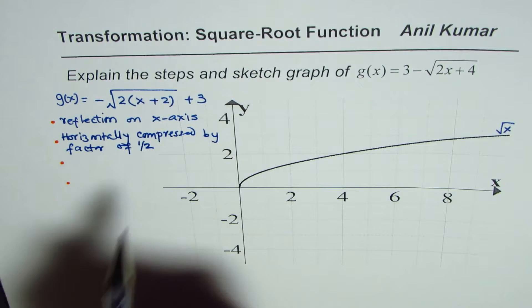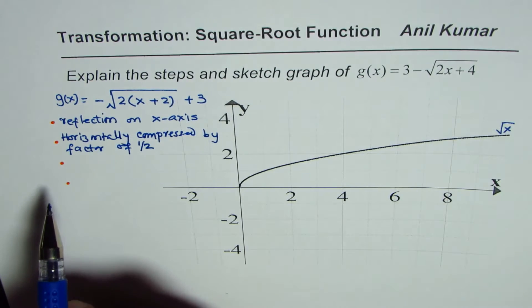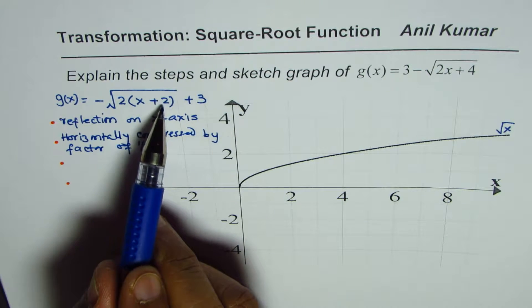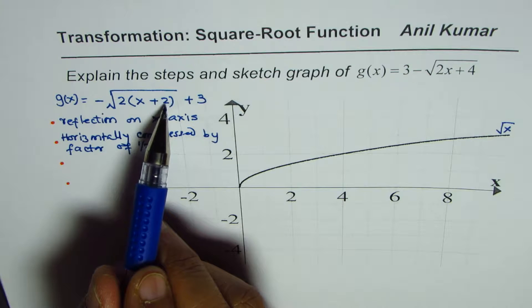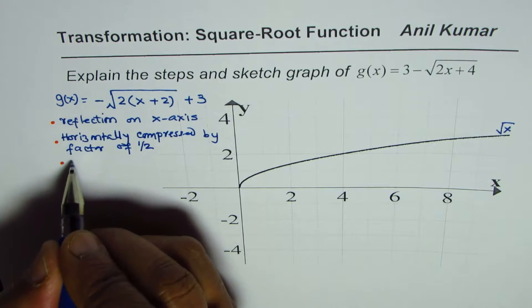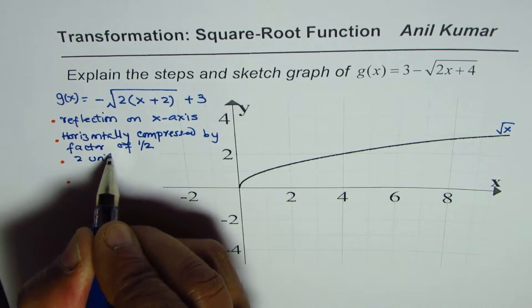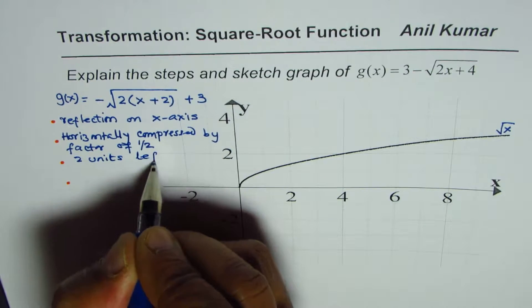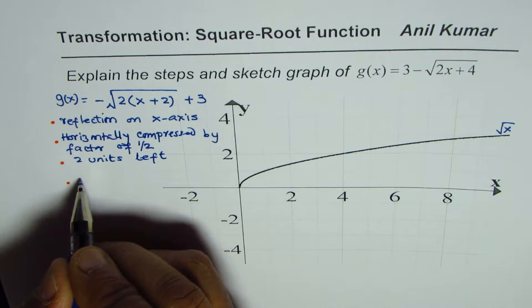So it is horizontally compressed by a factor of half, and then we have horizontal translation two units left, so it is two units left and three units up.